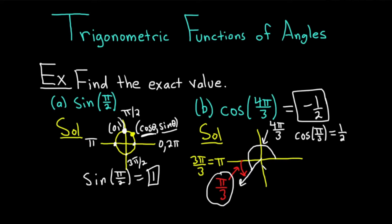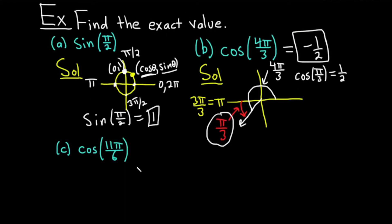So that's a very challenging concept. Let's go ahead and do another very similar one so you can get better at this. Part C: we want to evaluate the cosine of 11 pi over 6. The first step is to find the reference angle of 11 pi over 6.